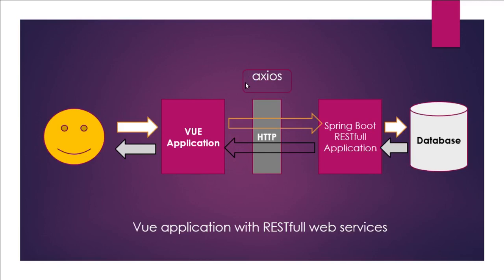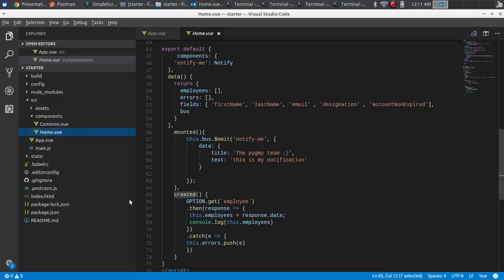I'm using a third-party module called Axios to handle HTTP — unlike Angular which has a built-in HTTP module. Through Axios, the request goes to the back end and brings back the list of employees from the database. Since the back end is an OAuth 2 application, I'm passing an OAuth token in the request header to get the list of employees.